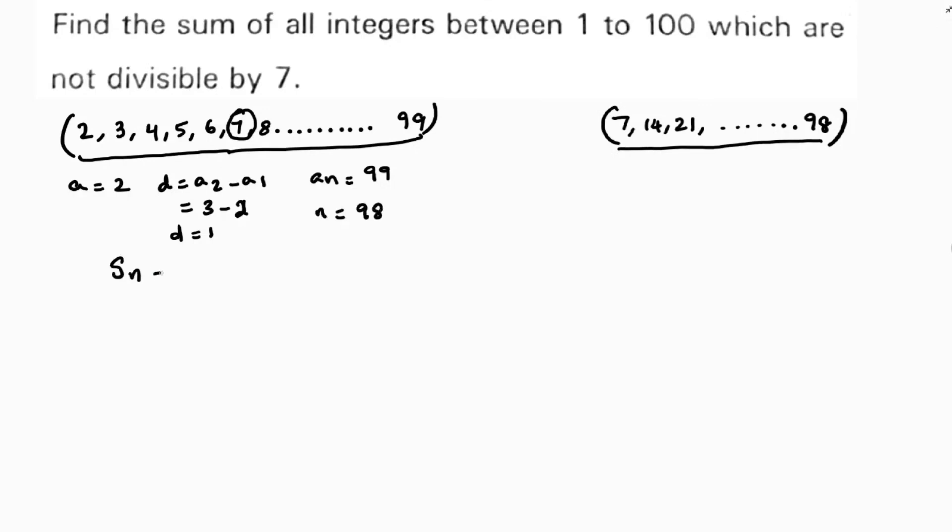So I'll find sum of all these terms, SN. I'll use the second formula as I have the number of terms. n by 2 into a plus l. N is 98 by 2. First term is 2. L is last term, which is 99.